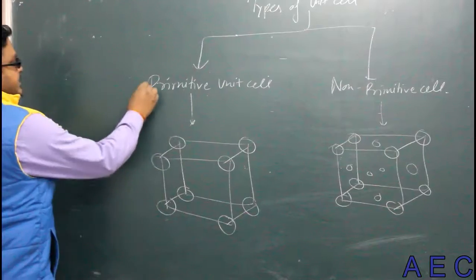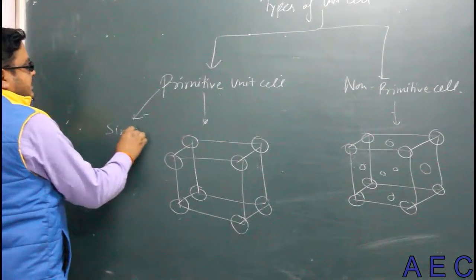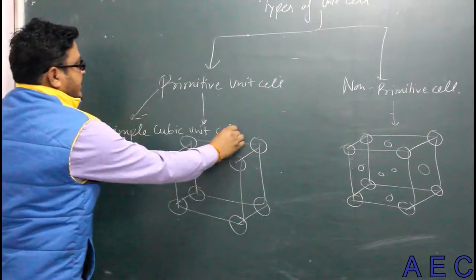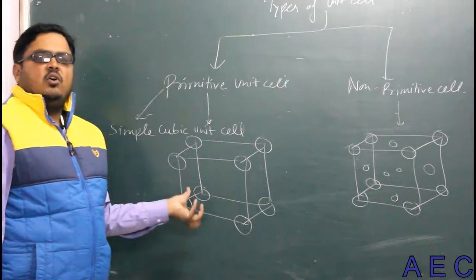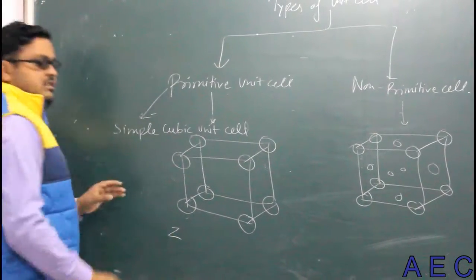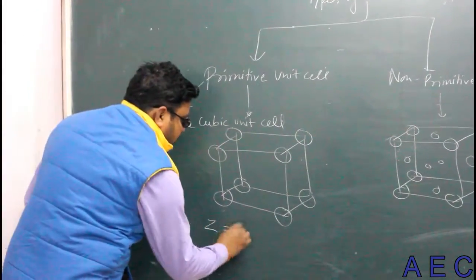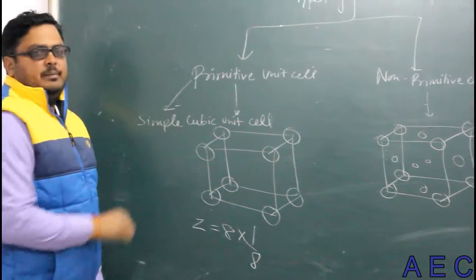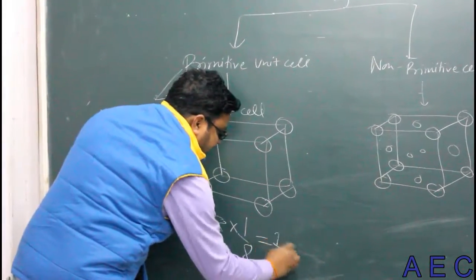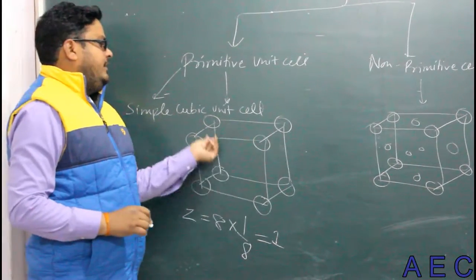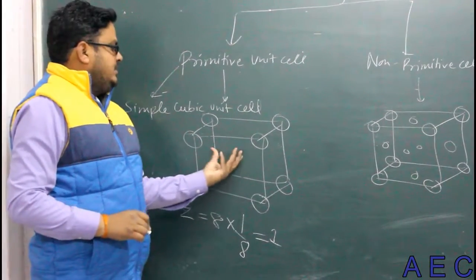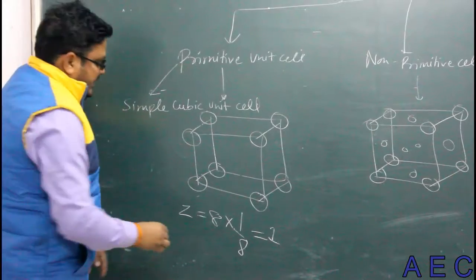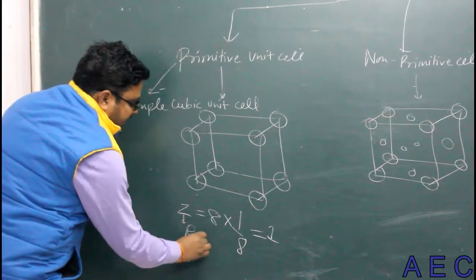In primitive unit cell classification, there is simple cubic unit cell. In this unit cell, atoms are present only on the corners. Eight corners have atoms, contribution of each corner is 1/8, so 8 into 1/8 gives Z equal to 1. This means total one atom per unit cell. Z is known as the number of atoms per unit cell or rank number.